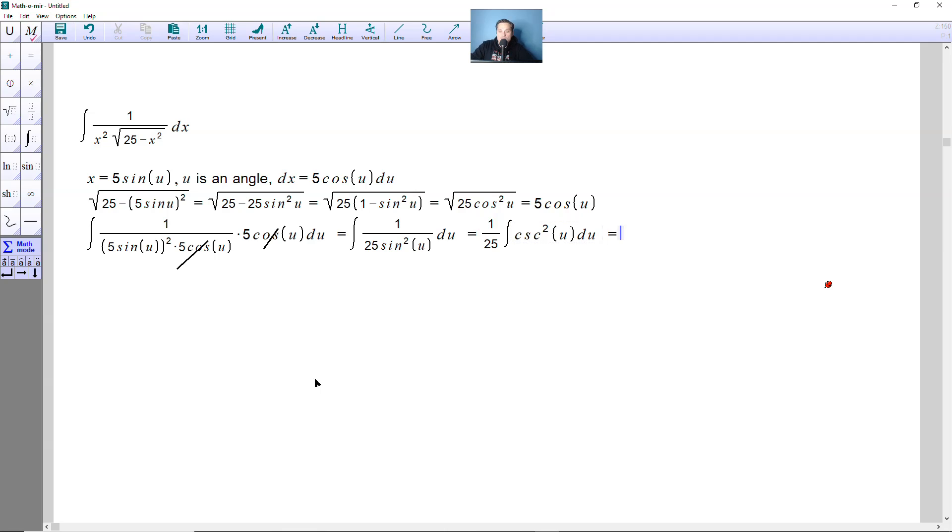And now, the antiderivative of cosecant squared of u is negative cotangent. So for that reason, you can write the following. Negative 1 over 25, cotangent of u plus c.